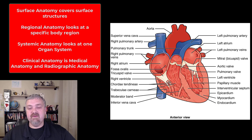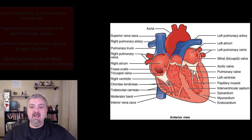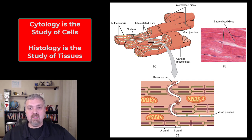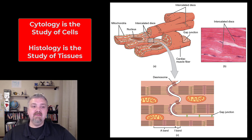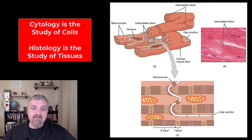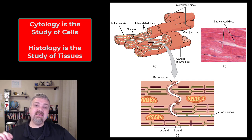Here we see just the structure of the heart. But if you want to go into microscopic anatomy and look at individual cardiomyocytes, or heart muscle cells, the two types of microscopic anatomy — which we will cover in detail — are cytology, the study of cells, and histology, the study of tissues.